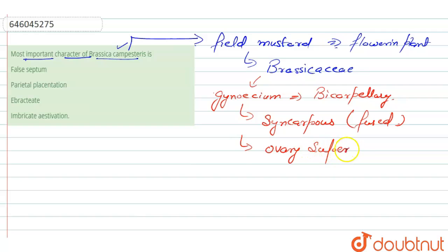And apart from this, the ovary is superior and unilocular, which means that it contains a single locule, and this ovary becomes bilocular due to the development...